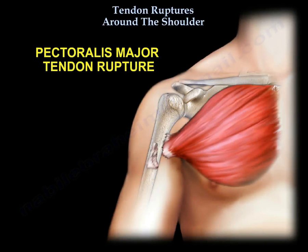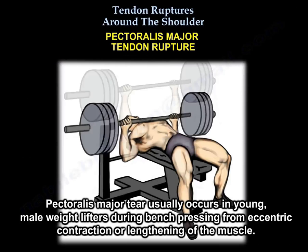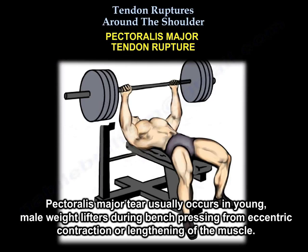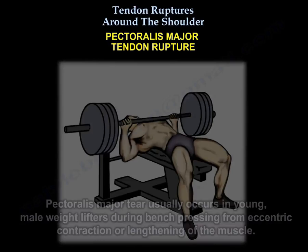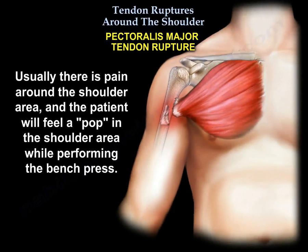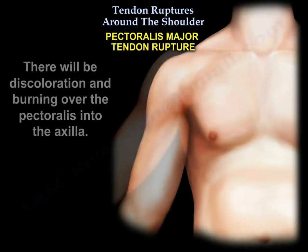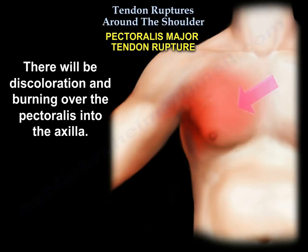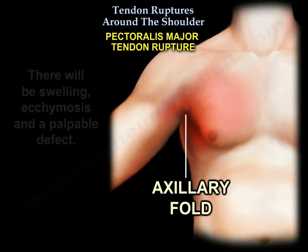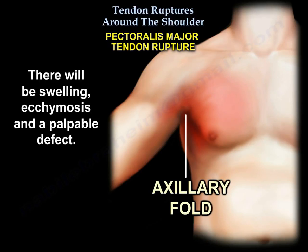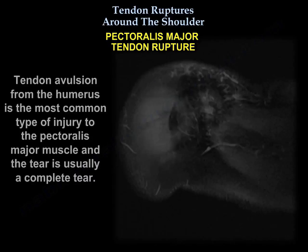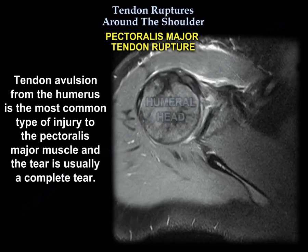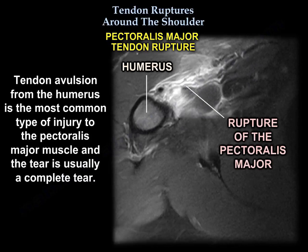Pectoralis major tendon rupture usually occurs in young male weightlifters during bench pressing from eccentric contraction or lengthening of the muscle. Usually there is pain around the shoulder area and the patient will feel a pop while performing the bench press. There will be discoloration and bruising over the pectoralis into the axilla, as well as swelling, ecchymosis, and a palpable defect. The patient will have loss of contour of the axillary fold. Tendon avulsion from the humerus is the most common type of injury to the pectoralis major muscle, and the tear is usually a complete one.